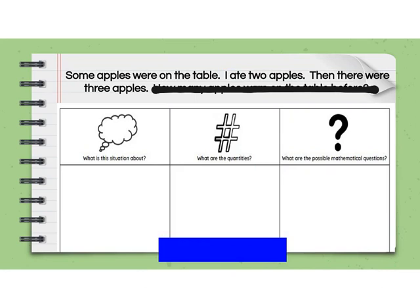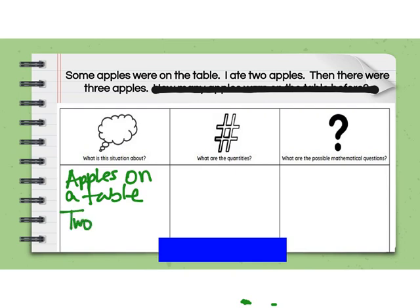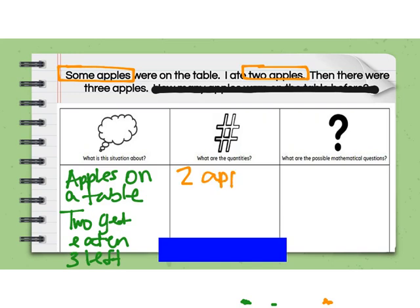One last problem together. Some apples were on the table. I ate two apples. Then there were three apples. Think about that for just a second on your own — what is the situation about, what are the quantities, what are the possible questions? So we have apples on a table, but it doesn't tell us how many. Then someone came along and two were eaten. Then there were three left. Looking at our quantities: some apples — we don't really know how many. We ate two apples. And then three apples left.